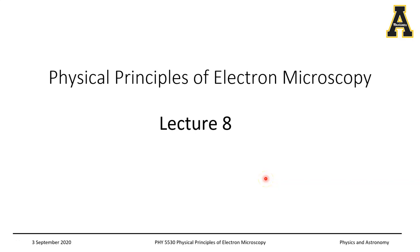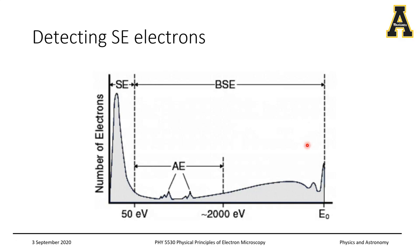Hello everyone, today we are going to continue from where we left off in the last class, where we were looking at backscattered electrons and how they can be detected using the solid-state detector. As a quick recap, if you look at the energy spectrum of electrons coming out of the sample, you have secondary electrons with energy less than 50 electron volts, and then a wide range of backscattered electrons generated from elastic scattering with energies all the way up to E0 — the energy of the incoming electron beam. The topic today is how we can detect these extremely low energy secondary electrons.